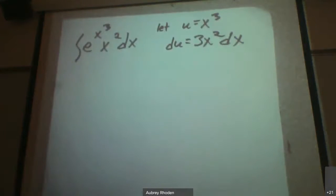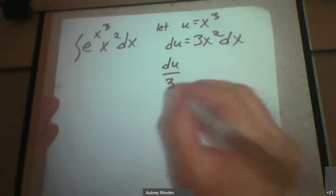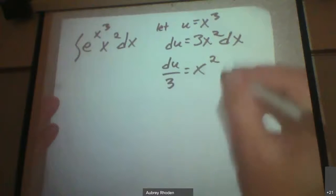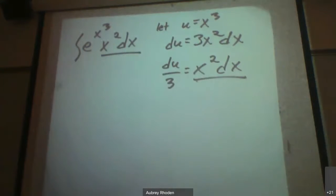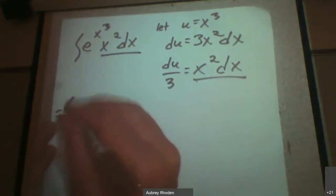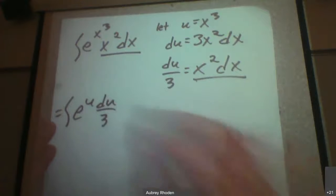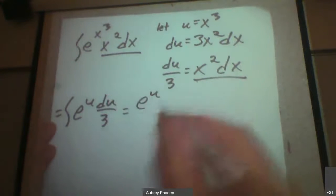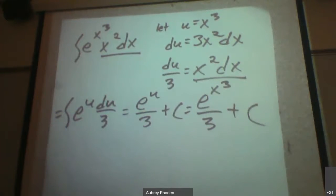All right. So du would be 3x squared dx, but I don't have a 3 in this problem. So du divided by 3 would equal x squared dx. So that's e to the u divided by 3 plus a constant,